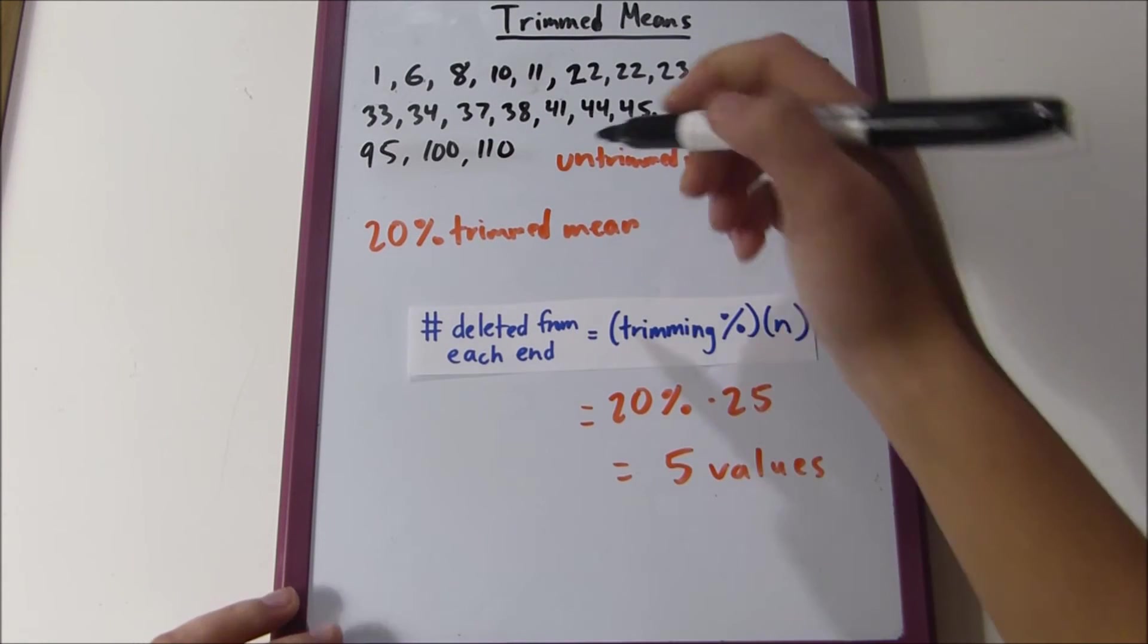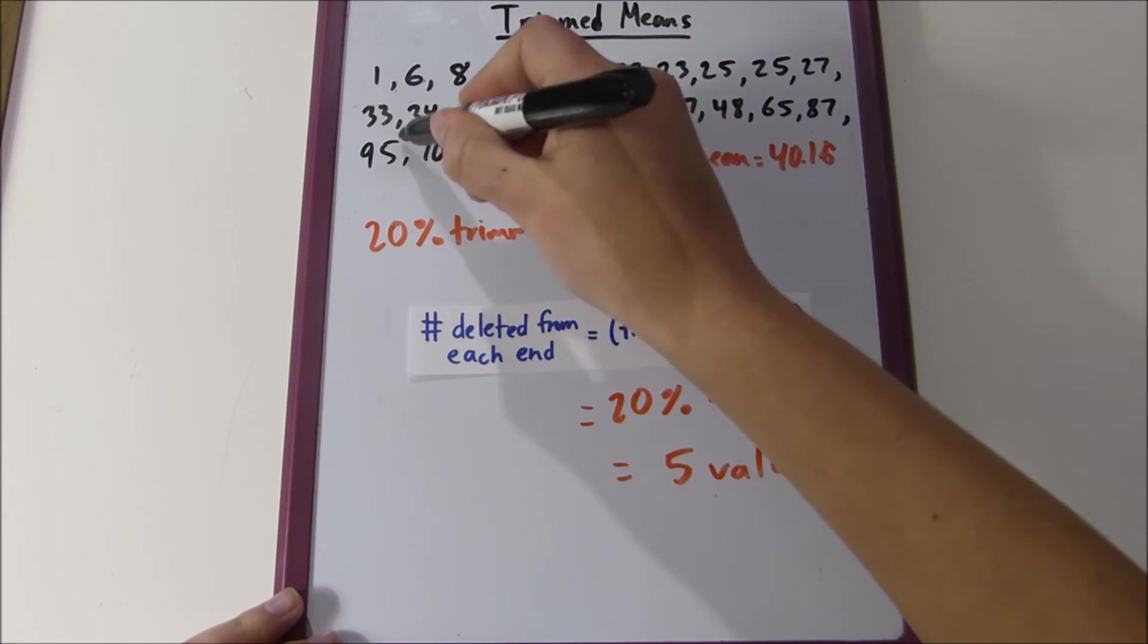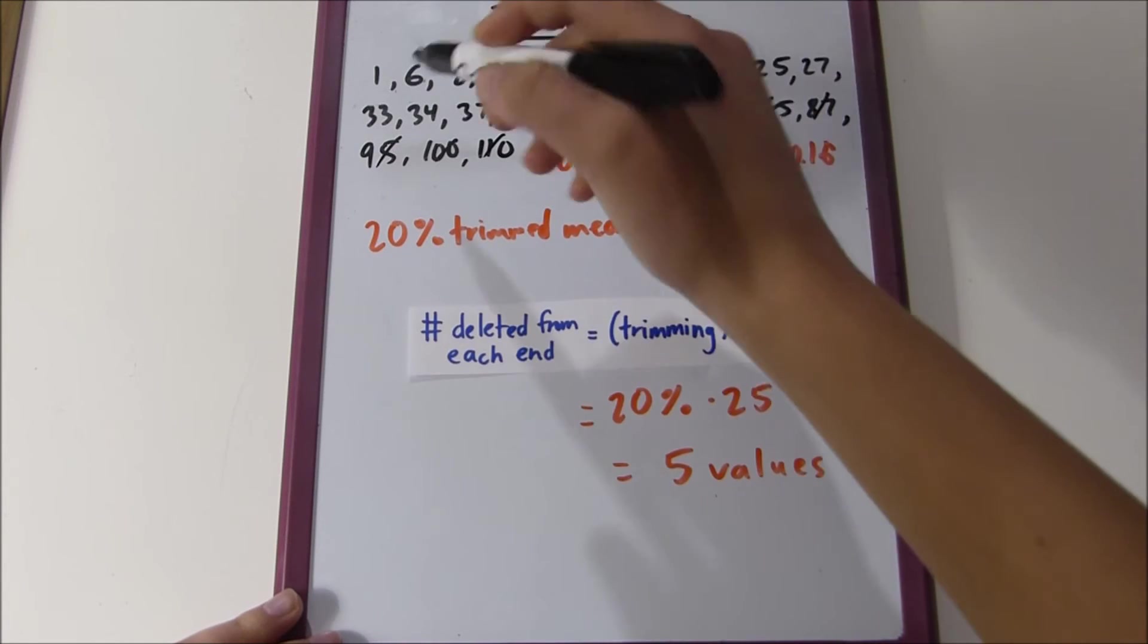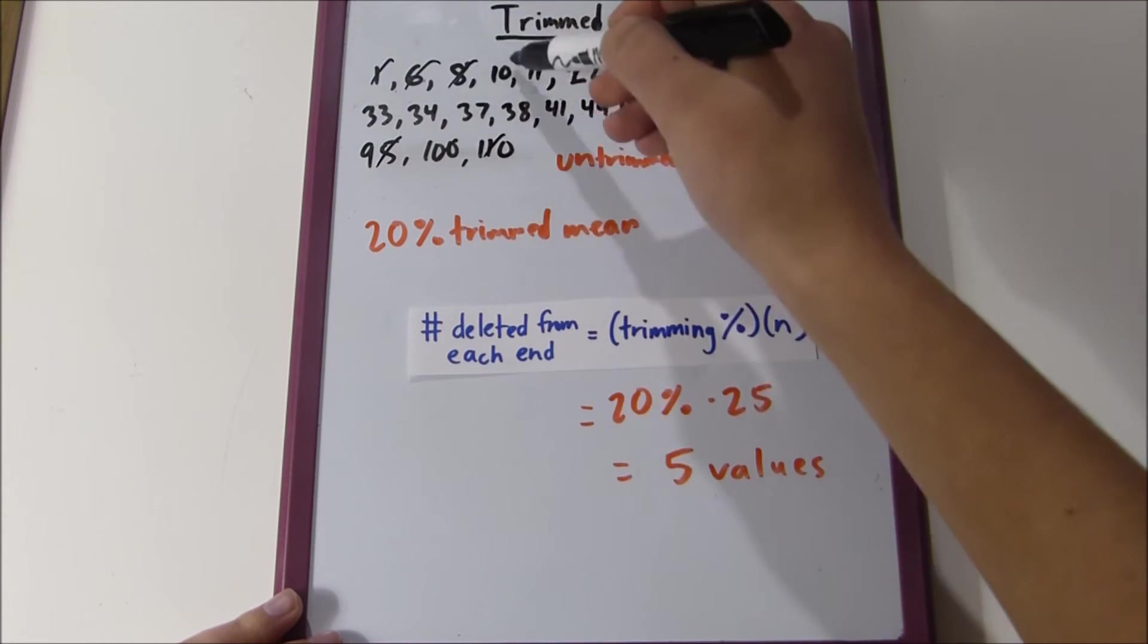If you take off 5 values from each end, you get rid of: 1, 2, 3, 4, 5 from the lower end, and 1, 2, 3, 4, 5 from the upper end.